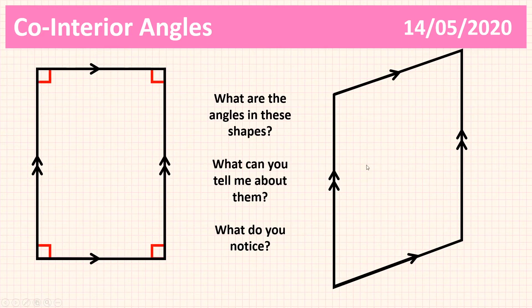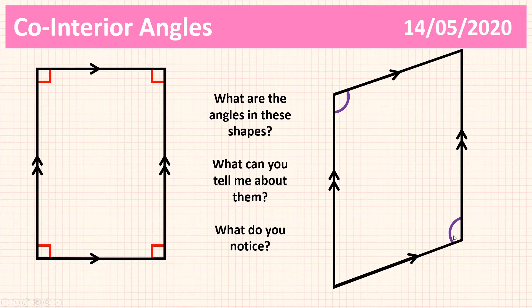Now let's have a look at the parallelogram. The angles in the parallelogram are very important — they're very distinct. We know that the opposite angles in a parallelogram are equal, and our geometry of parallelograms tells us that. So these two are equal and these two are equal — the purple angles are equal and the pink angles are equal.